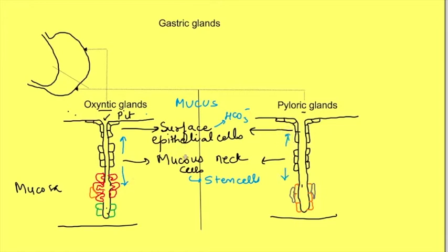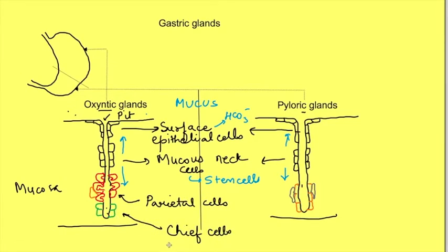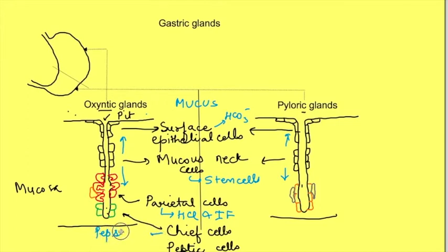Apart from these two cell types present in both oxyntic and pyloric glands, oxyntic glands also have parietal cells and chief cells, also known as peptic cells. Parietal cells secrete HCl and intrinsic factor. Chief cells are the source of the enzyme pepsinogen, which is converted into its active form pepsin by HCl. Oxyntic glands also have enterochromaffin-like cells, which secrete histamine.